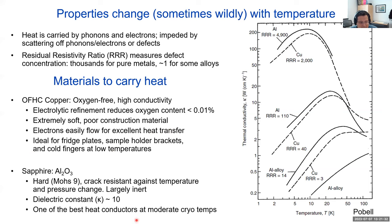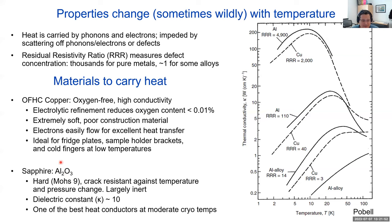Another interesting example: at middle cryogenic temperatures, sapphire is actually one of the very best thermal conductors you can buy. You'll often see sapphire used in cryosystems for middle temperatures. But for everything else, everywhere you're going to see copper.